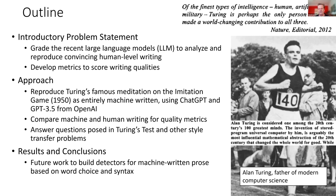Alan Turing is rated as one of the 20th century's 100 greatest minds and father of modern computer science. A Nature editorial commemorating his contributions rated him across types of intelligence, including artificial intelligence. He also contributed greatly to World War Two and the Enigma machine — all world-changing. If you look at the 100 contributors of the 20th century, you have specialists in one or two of those areas, but not all three.